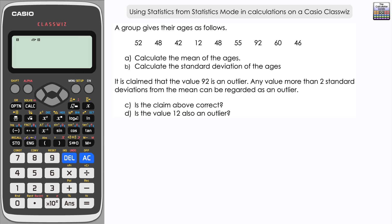It is claimed that the value 92 is an outlier. Any value more than two standard deviations from the mean can be regarded as an outlier. We have to test if the claim above is correct and if the value 12 is also an outlier.